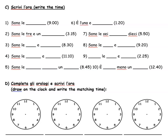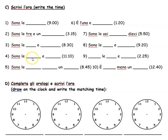Esercizio C: scrivi l'ora — write the time. You had to fill in the time where there was a gap. Number one: sono le nove — for nine o'clock. Number two: sono le tre e un quarto — quarto meaning quarter. You could have gone for quindici if there wasn't already the word 'un' there, so it has to be quarto. Number three: sono le otto e mezza, alternatively otto e trenta. Number four: sono le undici e dieci.